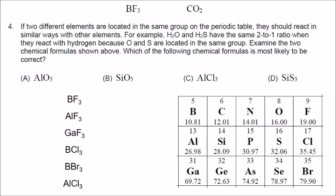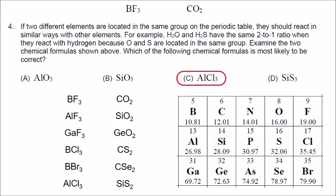Similarly, carbon dioxide CO₂ could also be written as SiO₂, GeO₂, CS₂, or CSe₂ — silicon and sulfur in a one-to-two ratio. All of these follow the pattern. So the correct answer is C: aluminum is in the same family as boron, and Cl is in the same family as fluorine. Aluminum trichloride follows the example of boron trifluoride. Every other choice was incorrect because either the ratio or the element substitution was wrong.